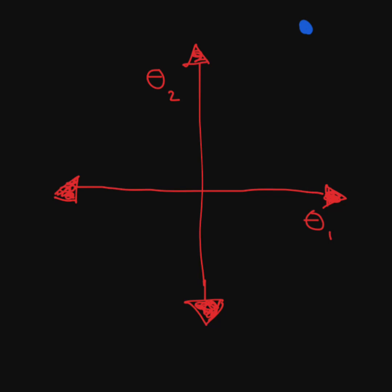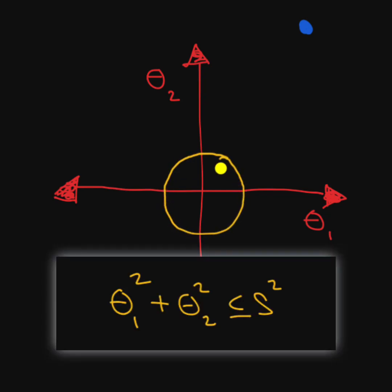But with ridge regression and lasso, we want the values of theta 1 and theta 2 to be confined into a very small region. For ridge, it'll be the circle, hence the equation.